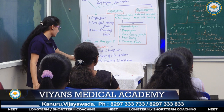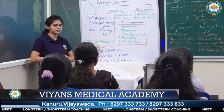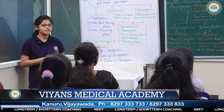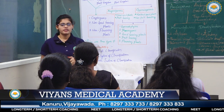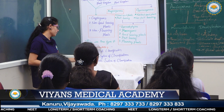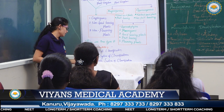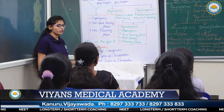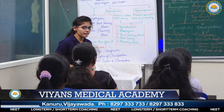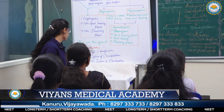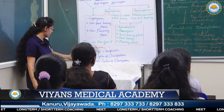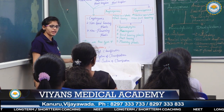The second classification is the natural system of classification, which was discovered by Bentham and Hooker. The book 'Genera Plantarum' was written by Bentham and Hooker. The third is the phylogenetic system of classification, which combines the artificial system of classification with the ancestral system of classification.